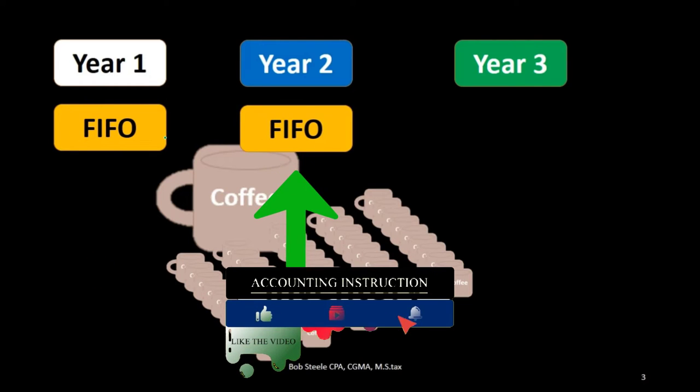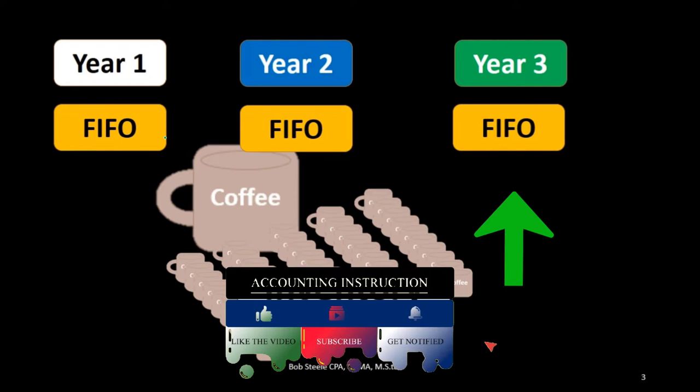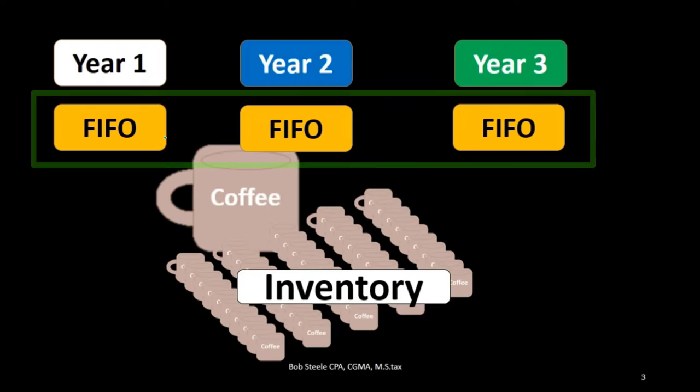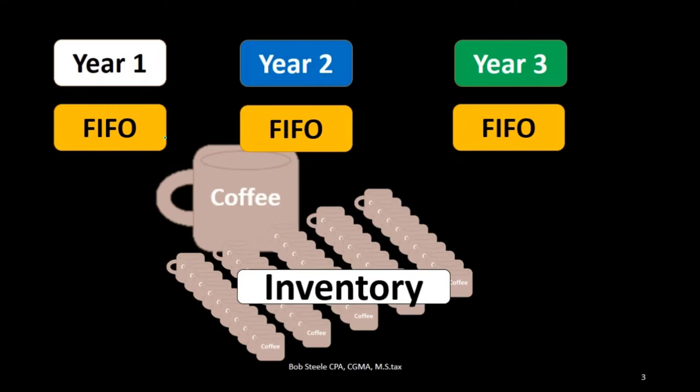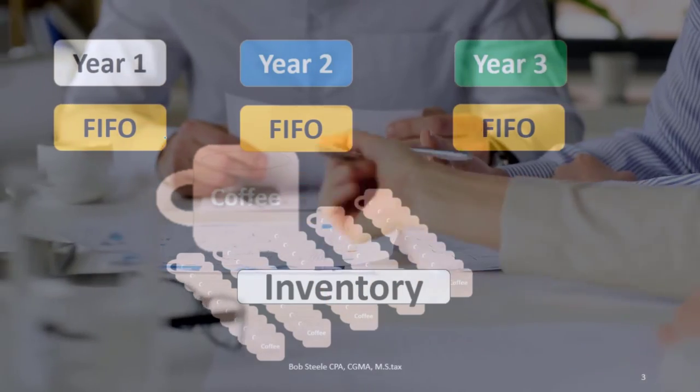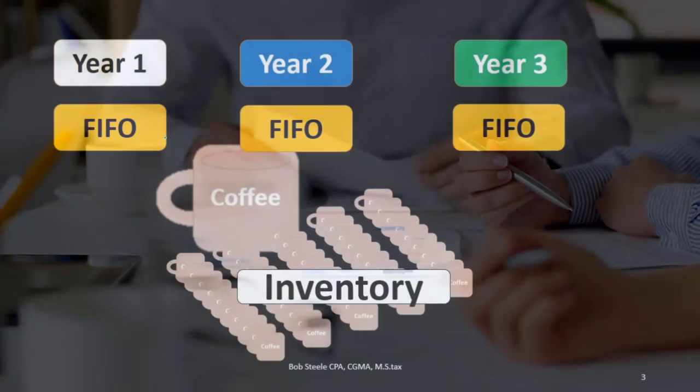we should do that for year 2 and year 3. We should not be changing from FIFO to, for example, LIFO in year 2, or to specific identification, or to average. All methods are appropriate. We could use any of those methods, but once we pick one, we want to be consistent.